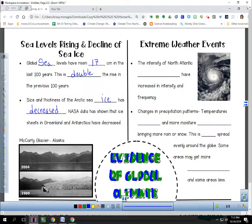For example, in 1909, McCarty Glacier in Alaska, this was a picture of that. 2004, this is what it looked like. I have a couple of things that I'm going to have you look at later that are linked up here. The climate time machine is interesting because you can see how things have changed over time.